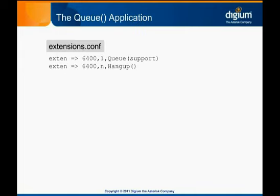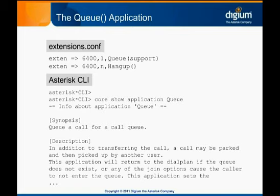Of course, defining a queue in queues.conf doesn't matter if we don't have a way for calls to be placed into it. The dial-plan application queue places a call into the specified queue. Similar to the dial application, there are over a dozen options you can specify to precisely customize the queue application. All that's necessary for a simple setup is the queue name. Core show application queue on the Asterisk CLI will display the various parameters available to the queue application. We've added extension 6400 to extensions.conf and set it to place calls in the support queue we've just created.